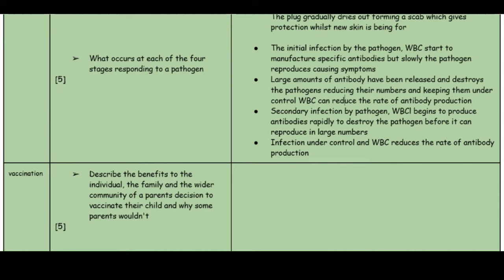In a secondary infection, white blood cells produce antibodies really rapidly to destroy the pathogens before they reproduce in large numbers again. Because memory cells formed during the primary infection are already present, it is much quicker to combat the secondary infection. Finally, the infection comes under control and the white blood cells reduce their rate of antibody production until it's completely cleared.